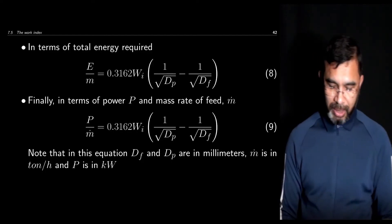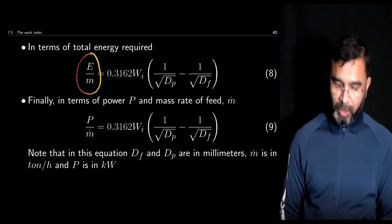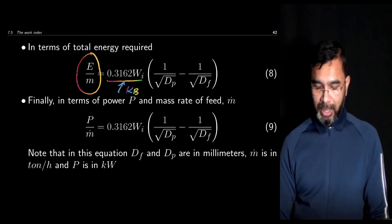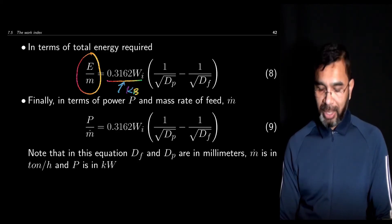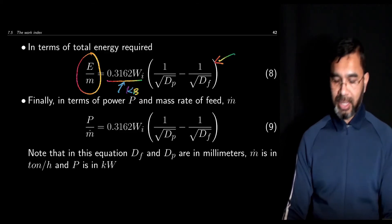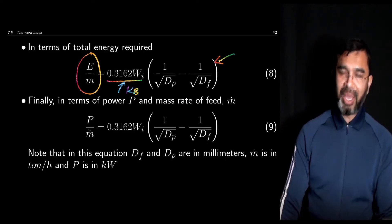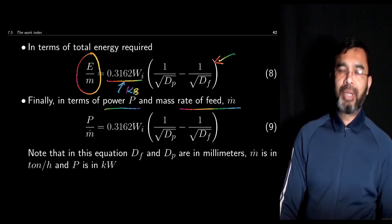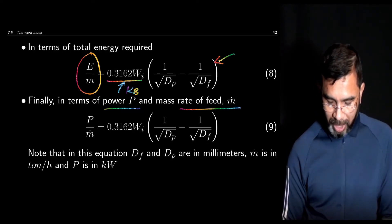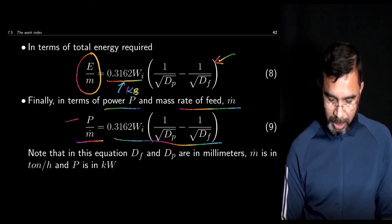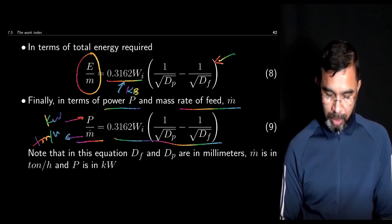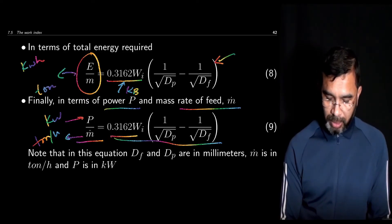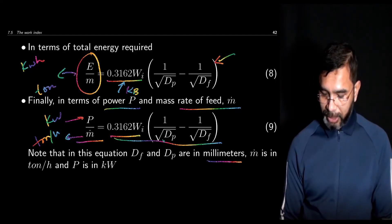Expressing in terms of specific energy Ẽ equals E/m (energy per unit mass), Bond's law becomes Ẽ equals 0.3162·W_I times (1/√d_P minus 1/√d_F), where particle sizes are in millimeters and energy is in kilowatt-hours per ton. If we express in terms of power P and mass feed rate ṁ, then P/ṁ equals 0.3162·W_I times (1/√d_P minus 1/√d_F), where power is in kilowatts and mass rate is in tons per hour.